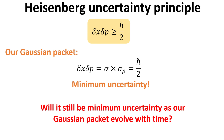The Heisenberg uncertainty principle states that the product of the spread in position and momentum should always be larger than h-bar divided by 2. With the spreads we just derived, we can compute this product. Interestingly, we see that our Gaussian packet achieves the minimum uncertainty. However, note that these position and momentum spreads were computed for the Gaussian packet at time zero. What happens when our Gaussian packet evolves with time? Will it still satisfy the minimum uncertainty? We shall leave this as an exercise — leave your comments below on what your answer might be.